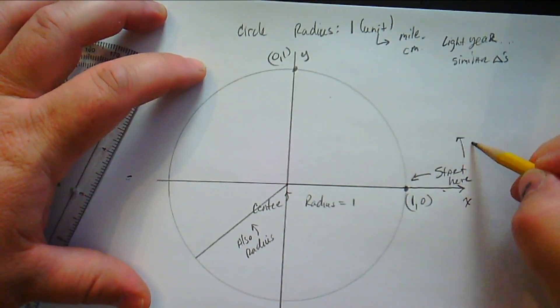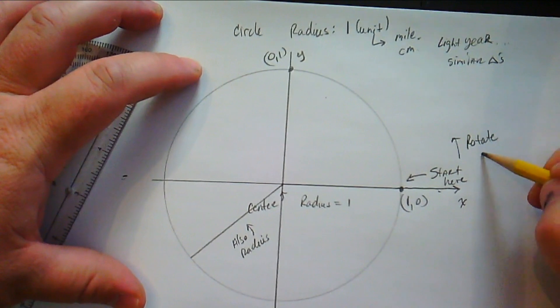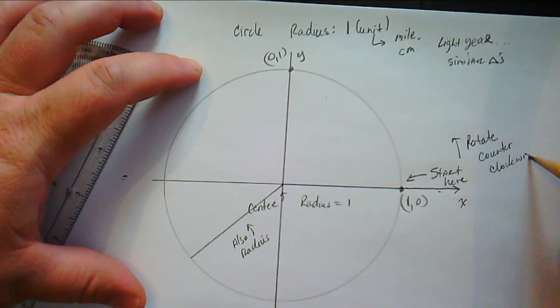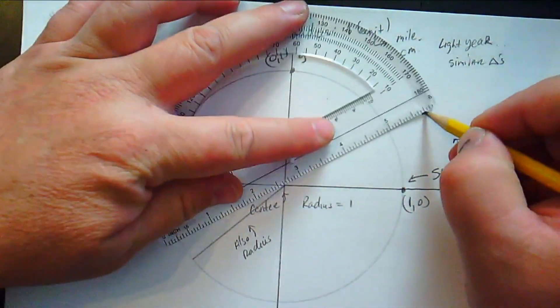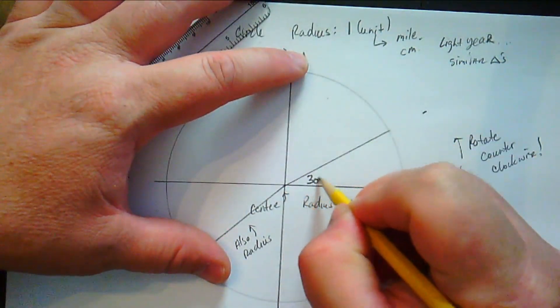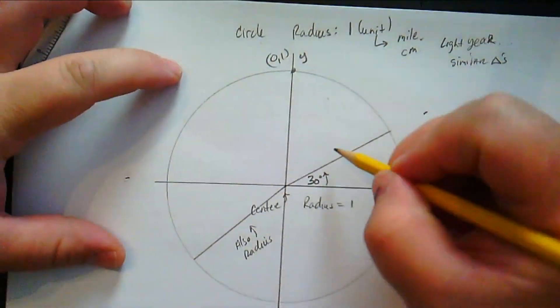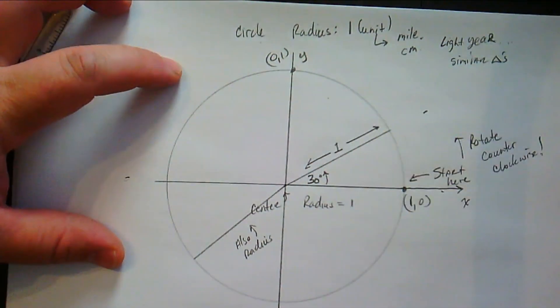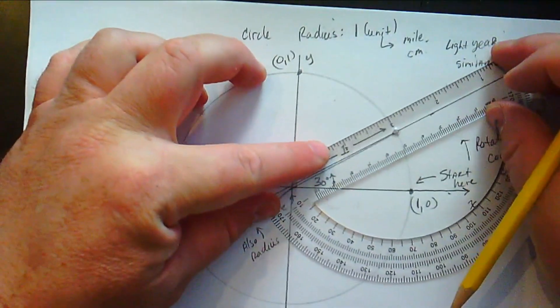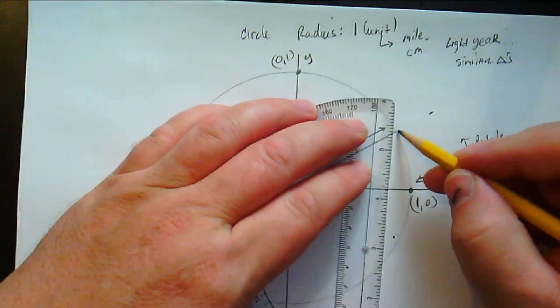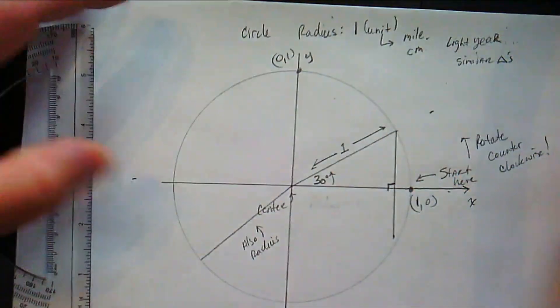Now, we start here, and we rotate counterclockwise. So that's going to be going kind of left, right? So if we were going to rotate, say, 30 degrees, so I went ahead and marked the 30-degree angle right there, that angle right there between the positive x-axis and wherever the angle stops rotating, that angle right there that's near the origin, well, that is your angle.